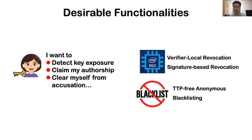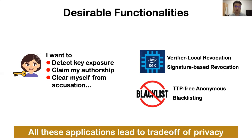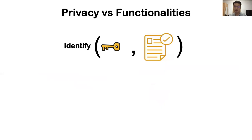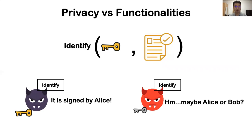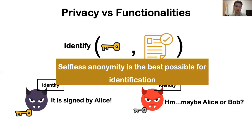There are more examples, and all of them lead to a trade-off with anonymity. All these functionalities are essentially built upon a very simple identification function: given a secret key, it allows identifying whether an anonymous signature was created using that secret key. When an adversary has the secret key of both Alice and Bob, she can run this identification locally and decide the real signer. Therefore, full anonymity is out of reach. Since selfless anonymity does not give the victim's secret key to the adversary, she cannot leverage this identification. Selfless anonymity is the best possible privacy definition compatible with identification.